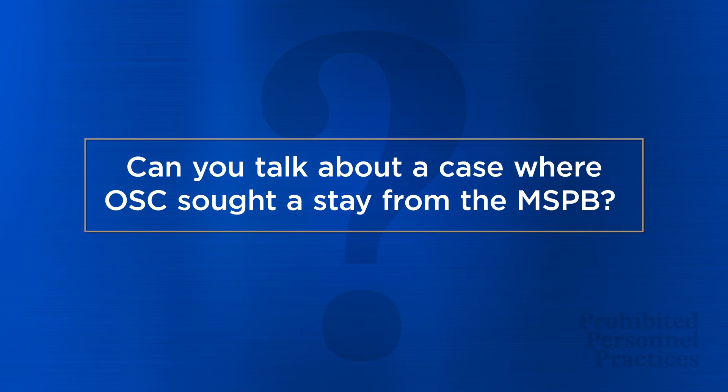One of the MSPB's roles is to act as an administrative court for federal employment claims. In one case, a former whistleblower faced a proposed removal just two months prior to her planned retirement. The agency used information from four investigations over five years to craft a removal that still lacked evidence for some charges. OSC filed a stay for the employee with the MSPB that delayed the agency from effecting her termination and allowed her to retire with full benefits.